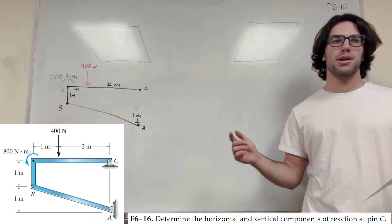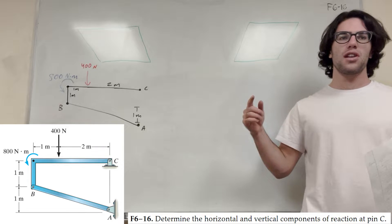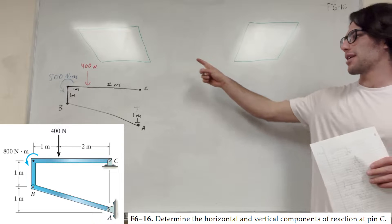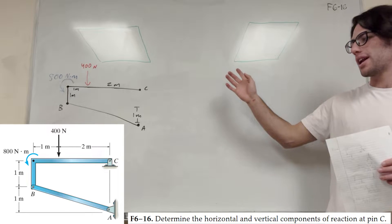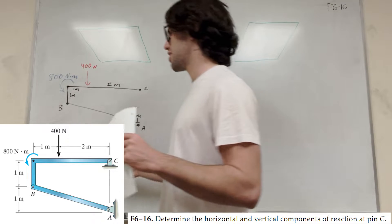What's up Cub gang? Alright, so we got the statics problem here. We're finding the horizontal and vertical components of the reaction at point C. So I got the picture up on the screen, but I went ahead and drew this force body diagram. So let's go ahead and finish this force body diagram.